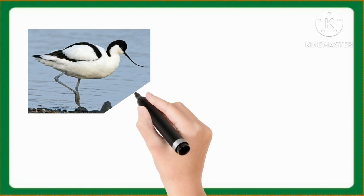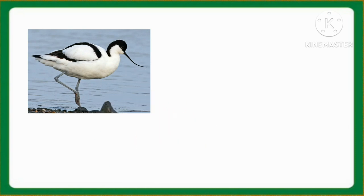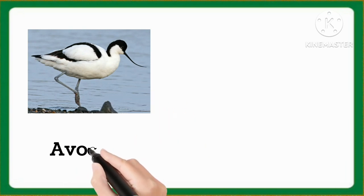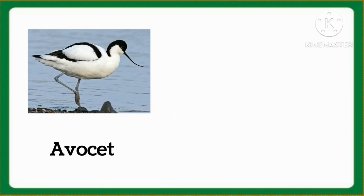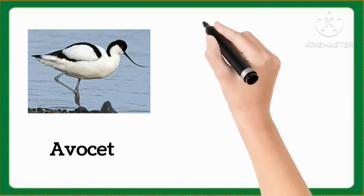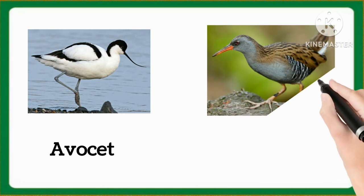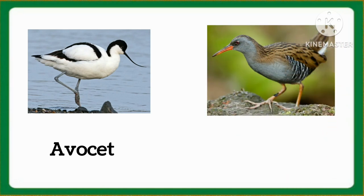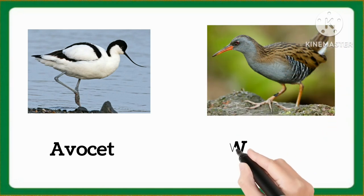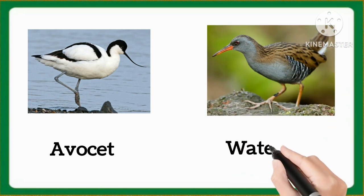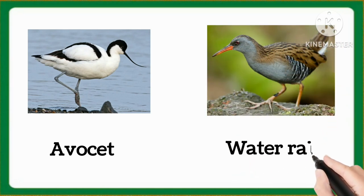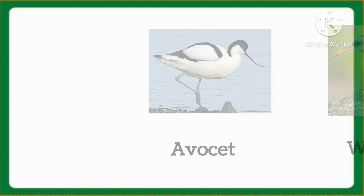And which word is this, kids? This is everset. Everset. And which word is this, kids? This is water rail. Water rail.